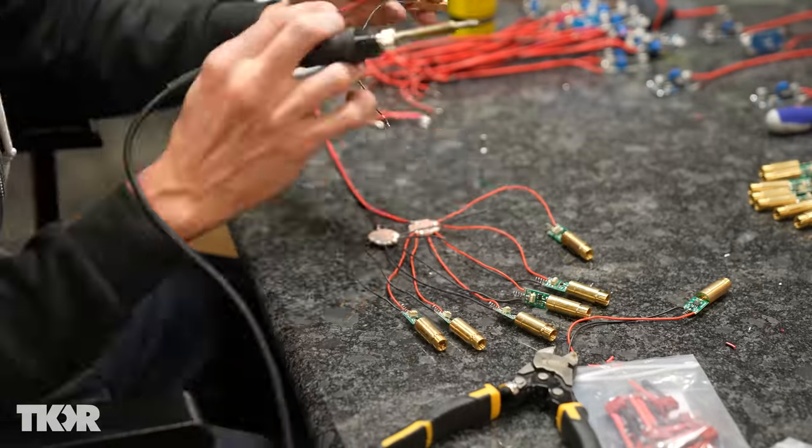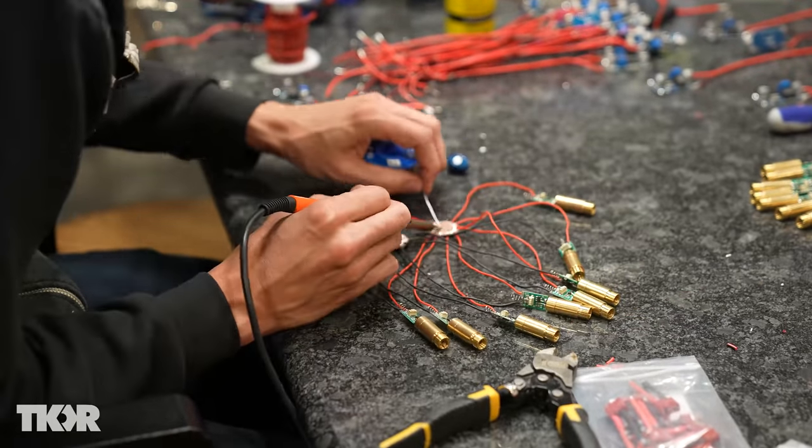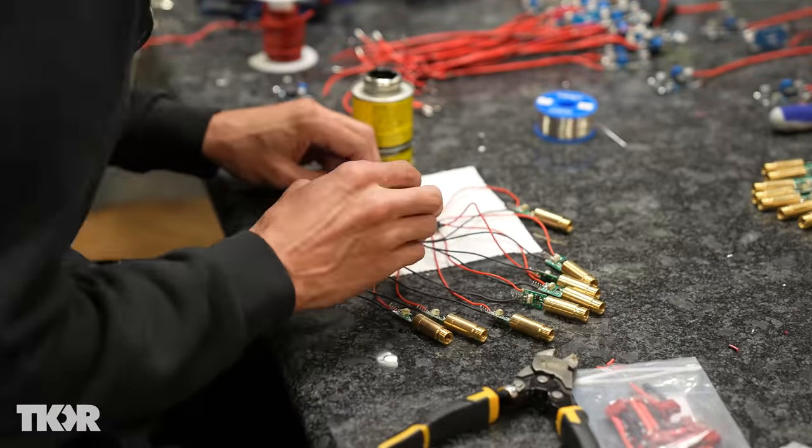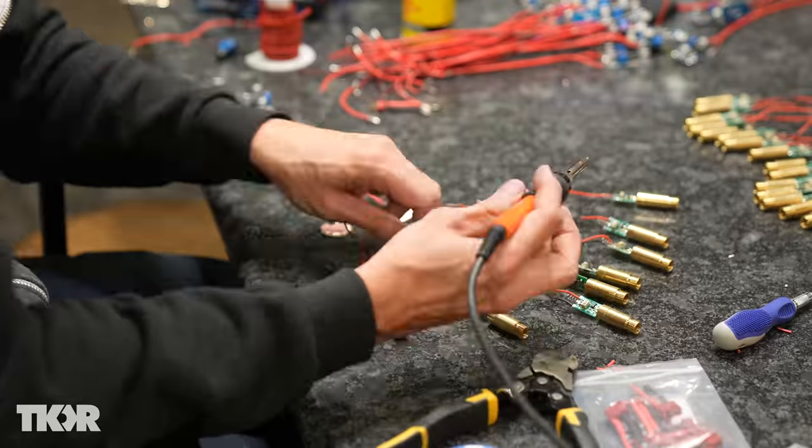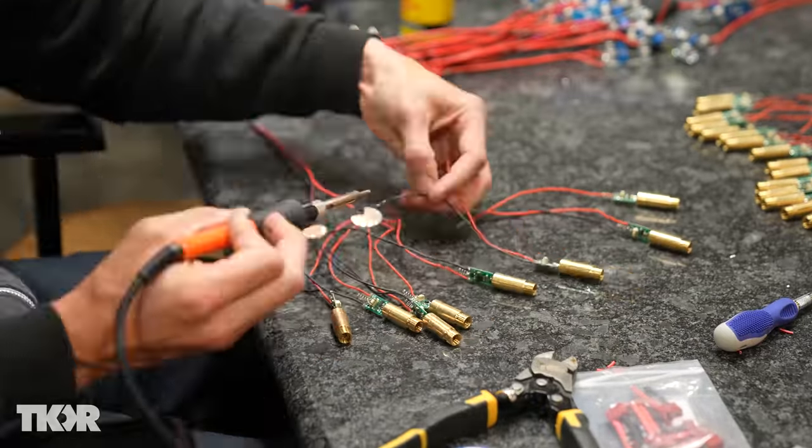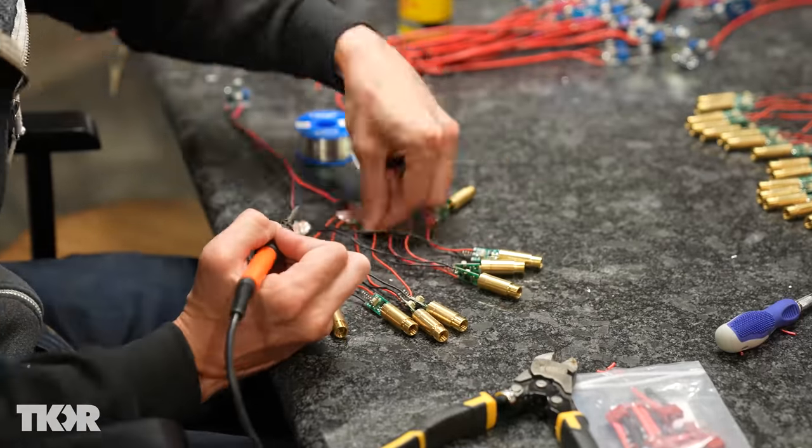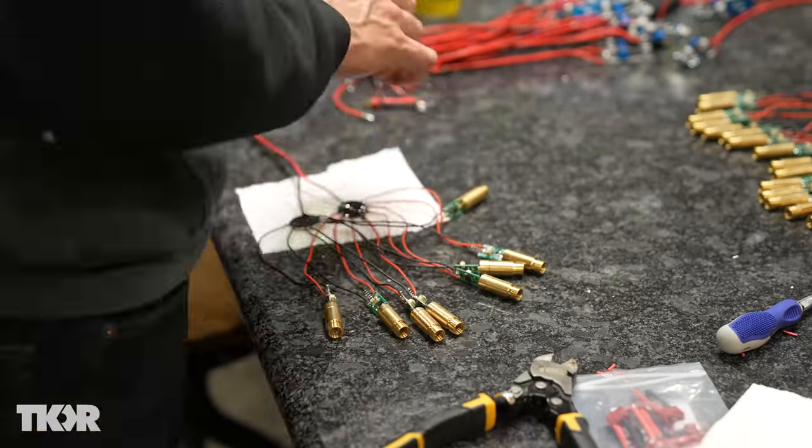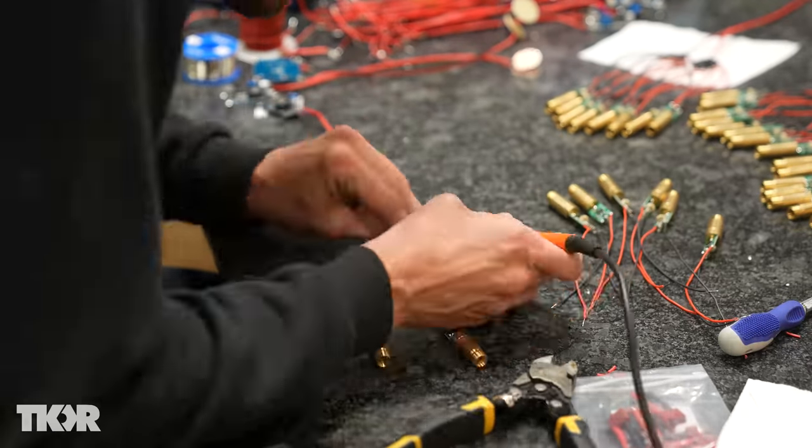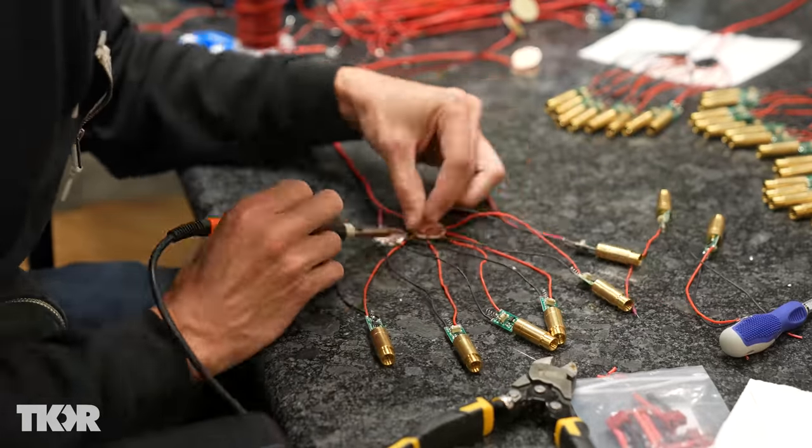We had 35 of these buck converters, every one of them had a positive and negative in and out, each one connected to a positive and negative board, and every one of those boards had five different lasers attached to it. All 70 boards did get coated with some liquid electric tape to make sure they didn't bump into each other while they're inside the laser and cause a short.